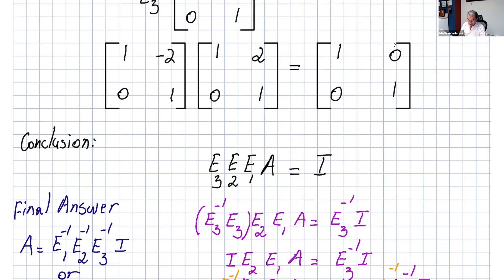The conclusion from this example: if we take A and multiply on the left by E1, then E2, then E3, we end up with the identity matrix I.